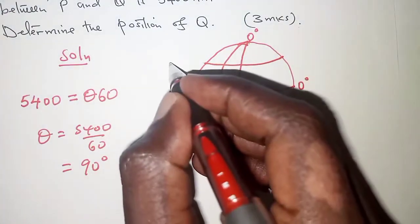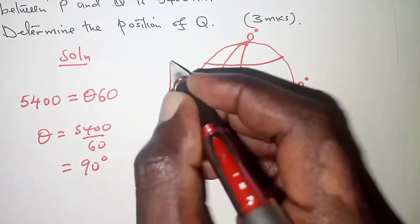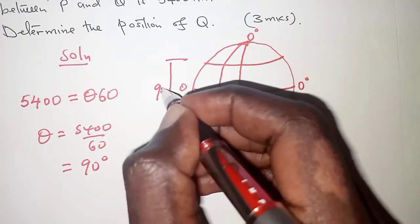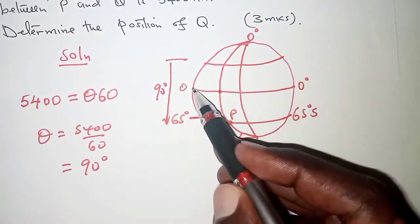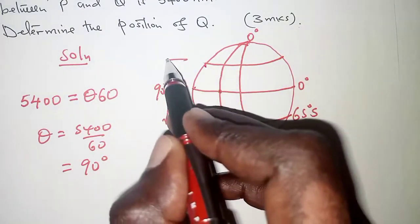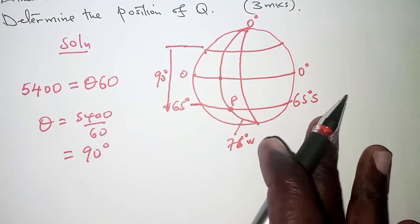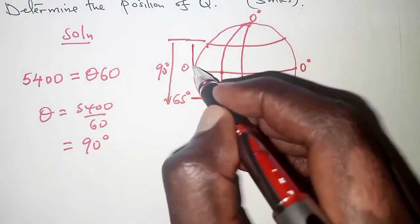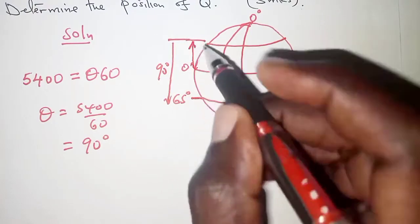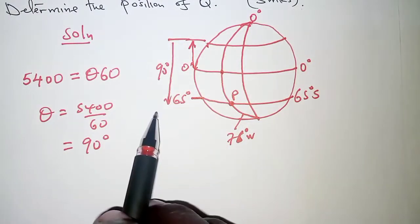Therefore, for the plane to move from 65 up to that latitude through 90 degrees, after the equator, how many degrees were added to this particular latitude here? We'll get that angle difference by subtracting 90 minus 65.